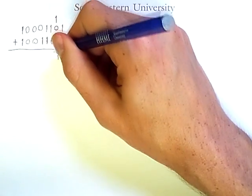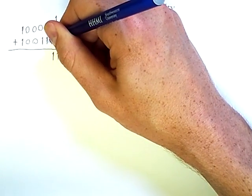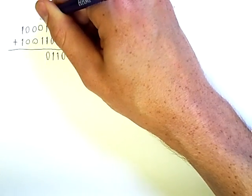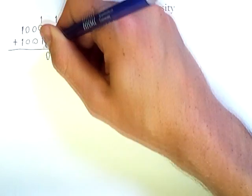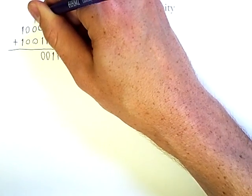Adding one and zero in this column gives me a one. Adding one and one here gives me a two, which requires me to put a zero here and carry a one. Adding one, zero, and one give me two again, and I carry a one.